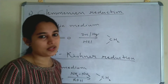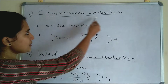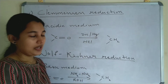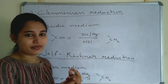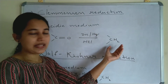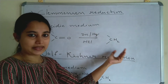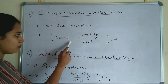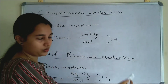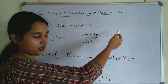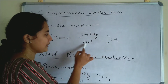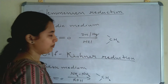First, let us see what Clemmensen Reduction is. Clemmensen Reduction is conducted in acidic medium. It is the reduction of a carbonyl group to CH₂. C=O is reduced to CH₂ — that is Clemmensen Reduction, and the key point is that it is conducted in acidic medium.